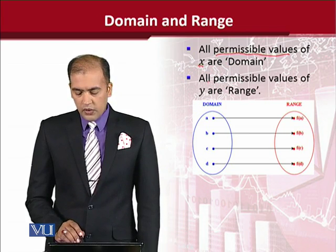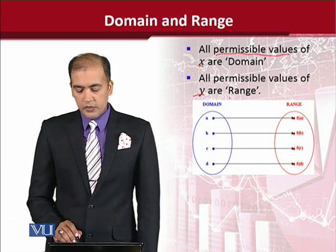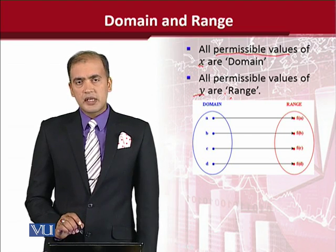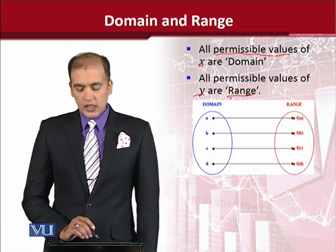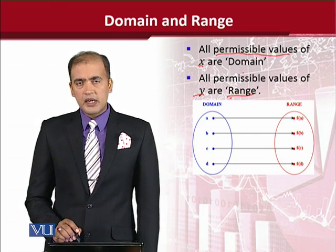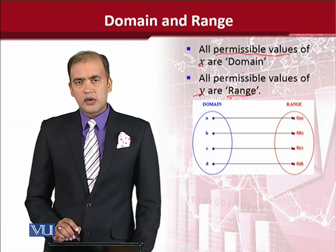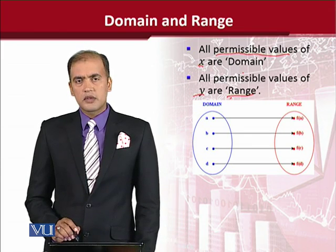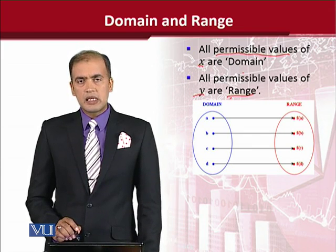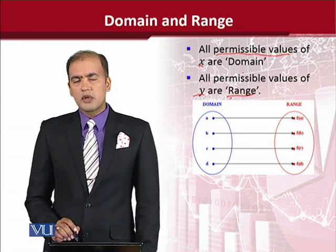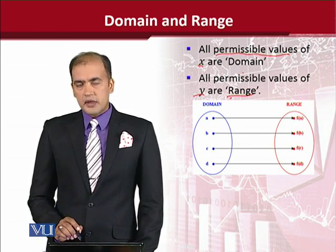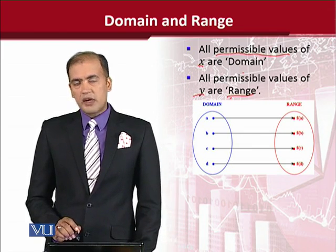Now, if all the permissible values of y — that is the dependent variable — are listed, then we shall be getting the range of a function. So it is very easy to understand: the domain is the set of all possible values of the independent variable, whereas the range shows all the possible values of the dependent variable.